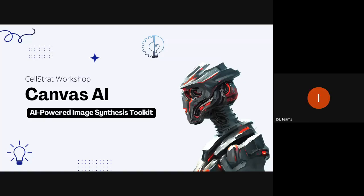Good morning and a warm welcome to today's text-to-image workshop by Cellstrat, which is part of the workshop series for the RV AI Hackathon. Today's topic is the text-to-image application called Canvas AI, which is an image synthesis tool powered by the latest AI technologies.